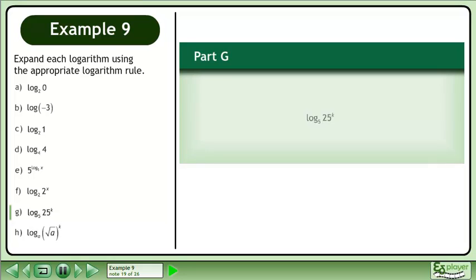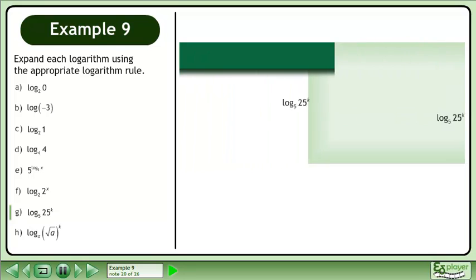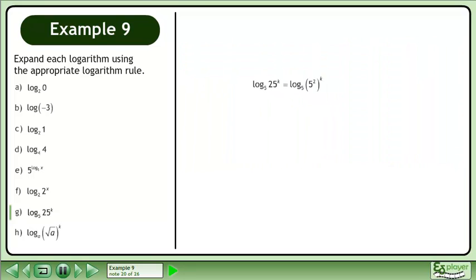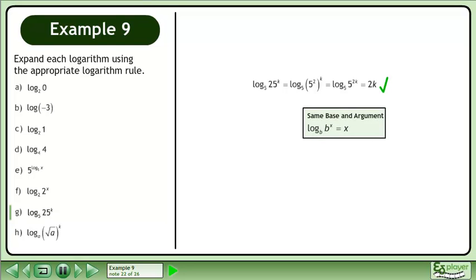In Part G, simplify the base 5 logarithm of 25 to the power of k. Rewrite 25 as 5 squared. Multiply the exponents. Use the rule shown to get the result, 2k.